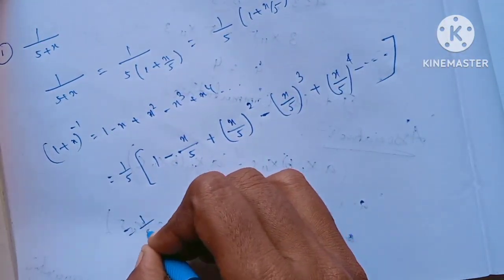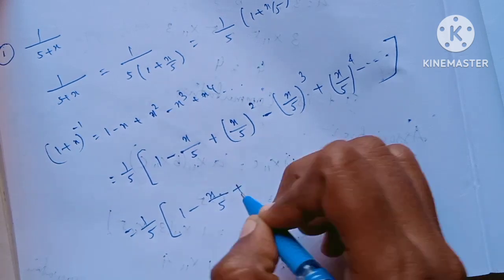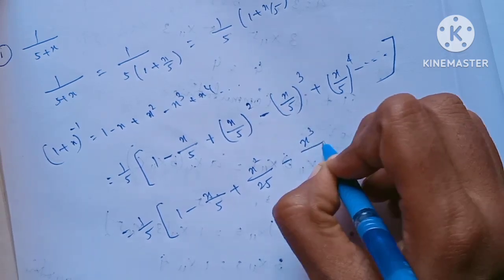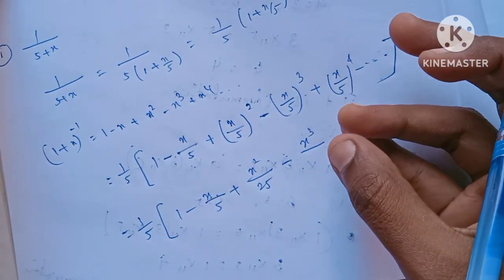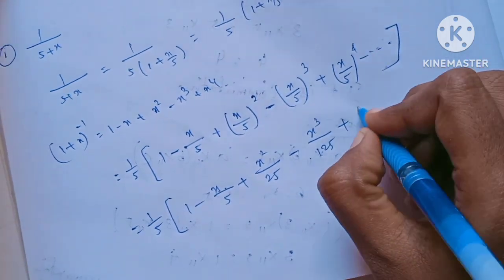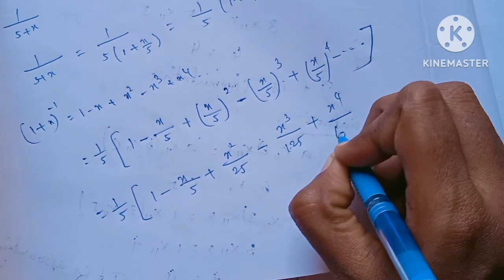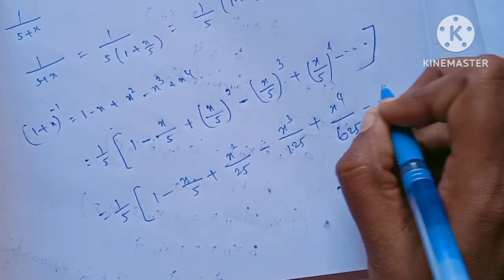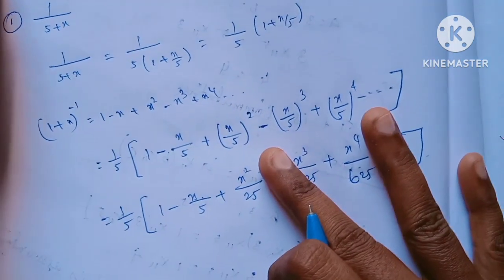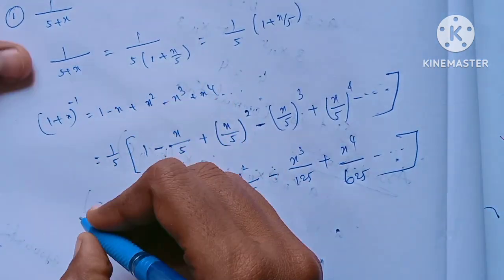Now substituting and simplifying: (1/5) times (1 - x/5 + x²/25 - x³/125 + x⁴/625). Here, (x/5)² equals x²/25, (x/5)³ gives denominator 125, and (x/5)⁴ gives denominator 625.